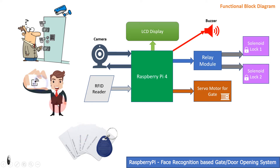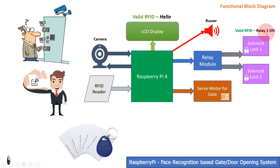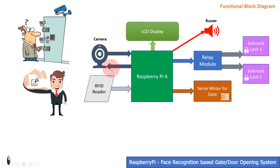When any user places an RFID card on the reader, if that card is valid, then Raspberry Pi will greet that user by showing some messages on the LCD display. It also prompts the user to look at the camera, and turns on relay one, the first lock, indicating that a valid RFID has been detected. Then it will give the command to turn on the camera to provide a live feed of the user's face.